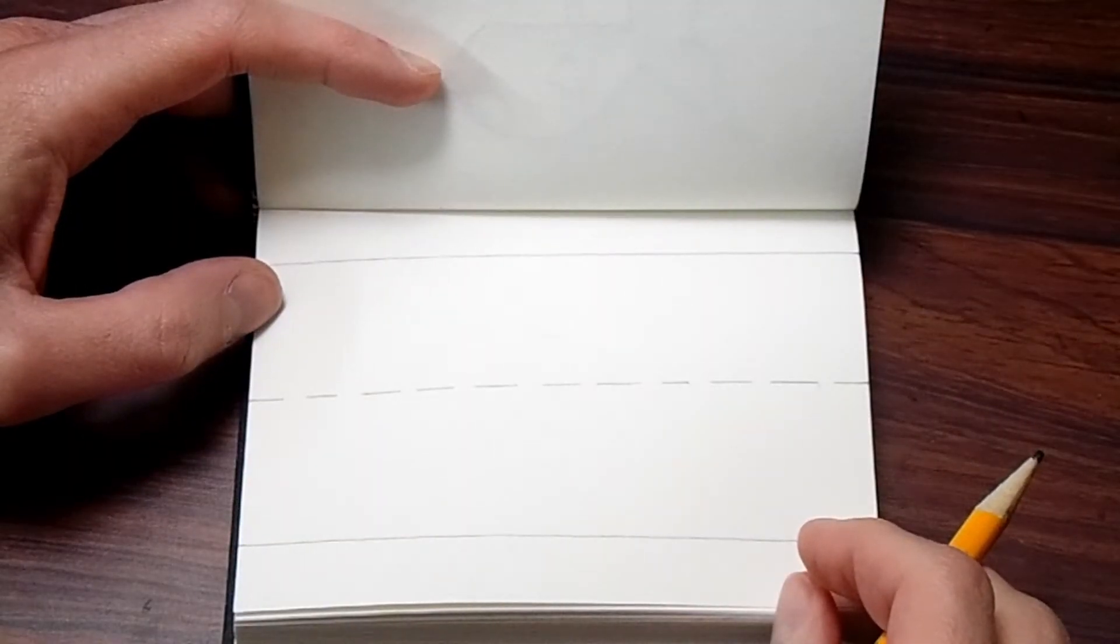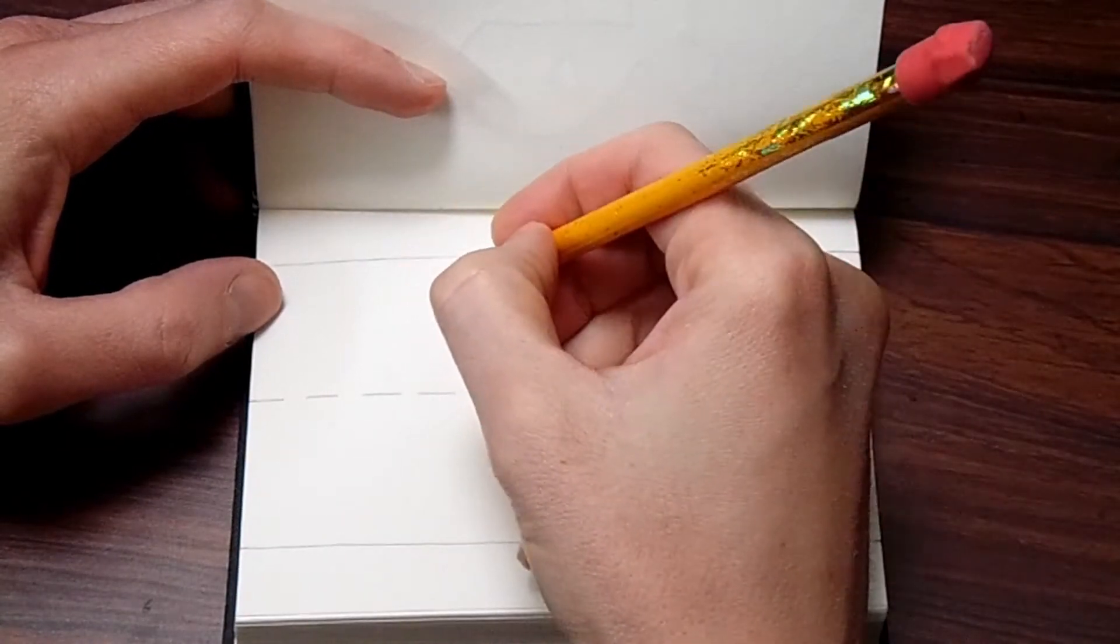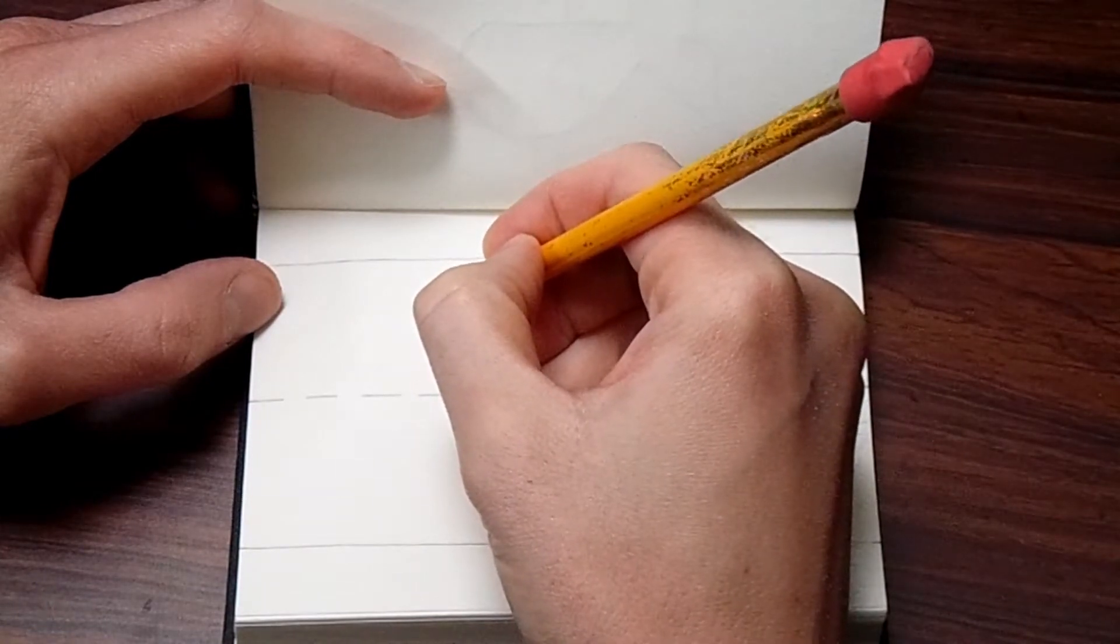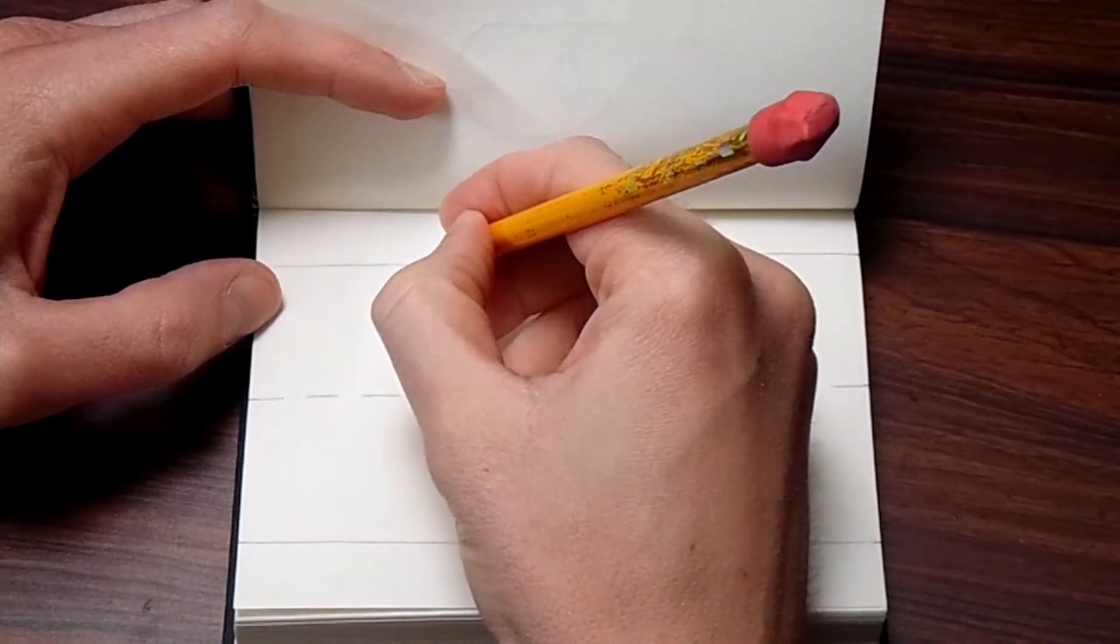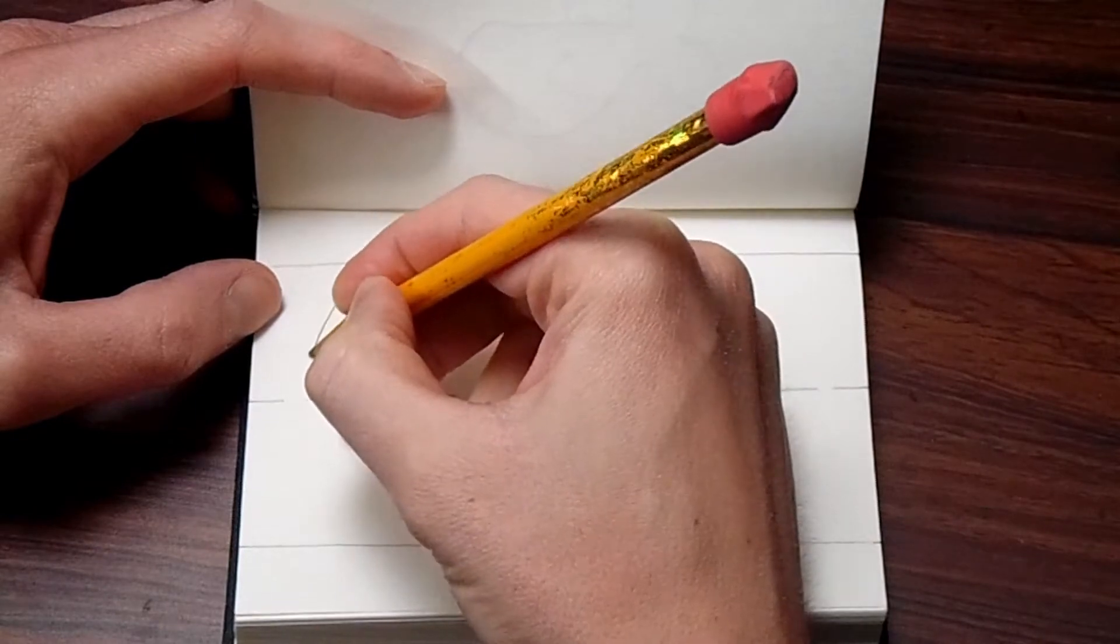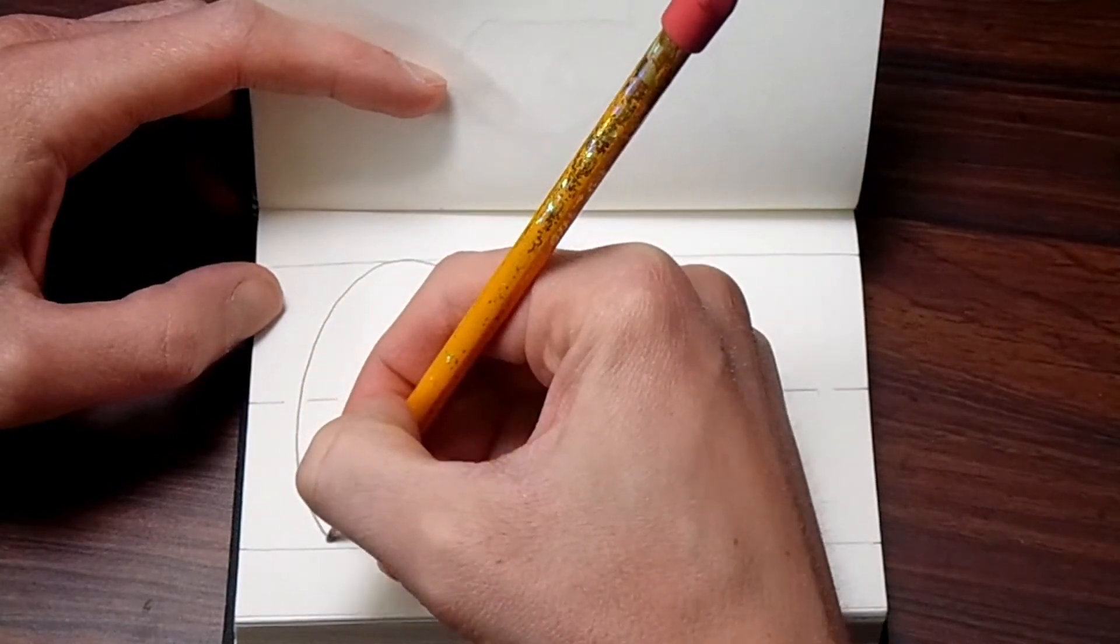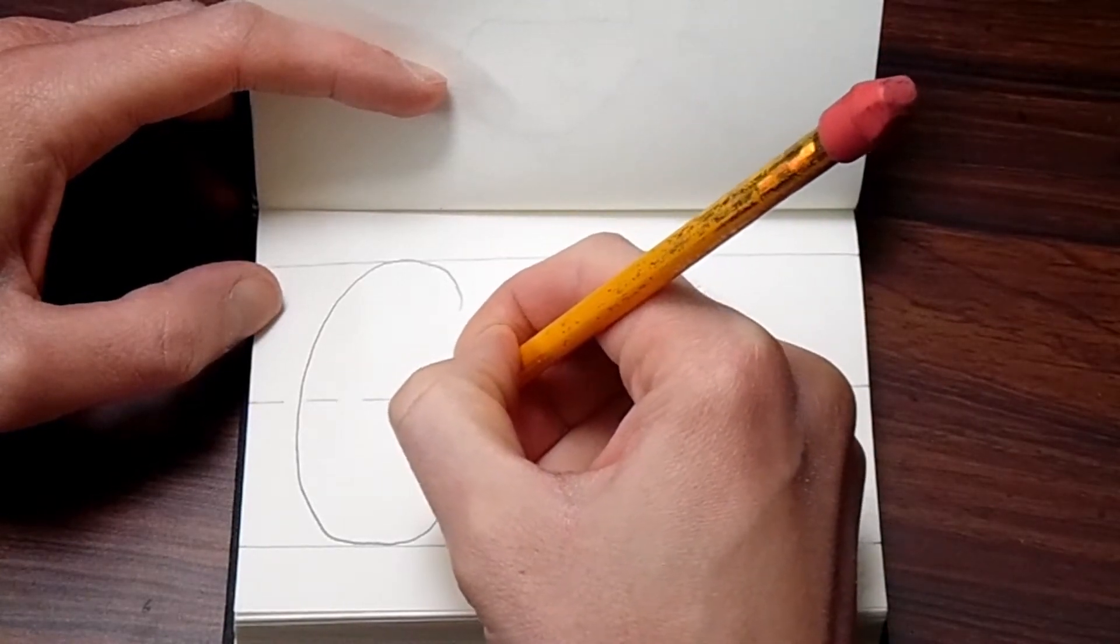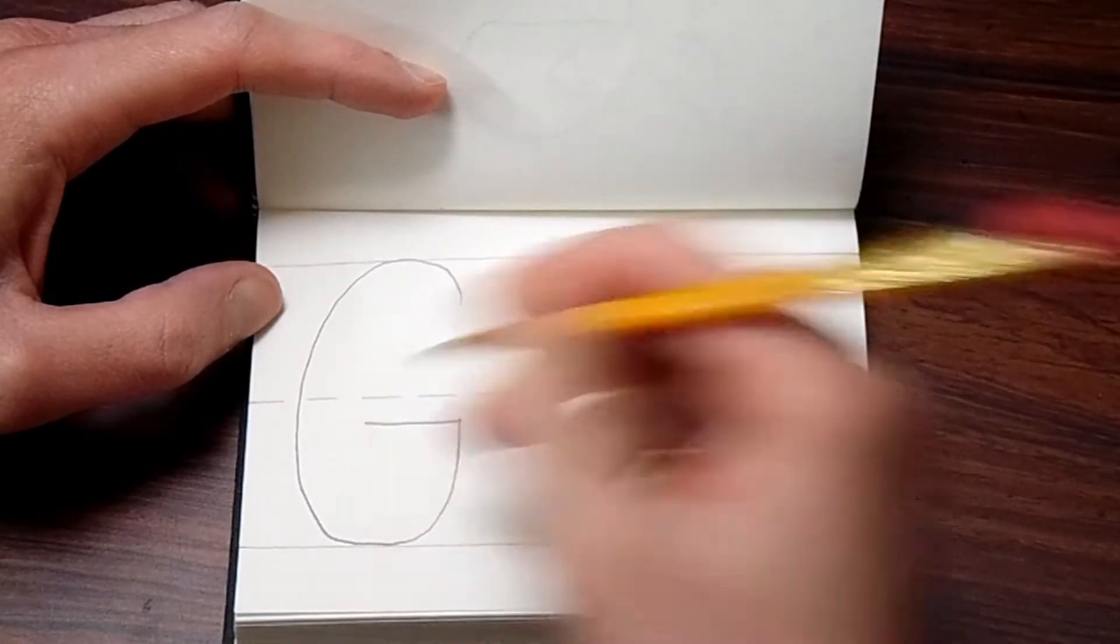To make the capital, or uppercase G, it's just a curve with a little straight line. So you're going to go a little bit below the top line, and we're going to start right here. We're going to curve up to touch that top line, keep that curve going all the way down to the bottom, and touch there, come up a little bit. And then here comes a straight line. It goes inside that curve you just made. And that is the capital G.